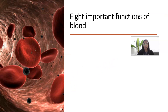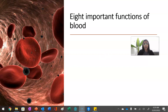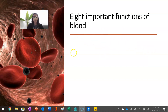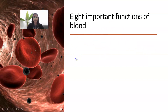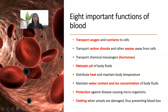We're going to start by looking at the eight important functions of blood. Blood is more than just red blood cells — it is a liquid composed of many different constituents. First, it transports oxygen and nutrients to cells. It also removes carbon dioxide and other waste from those cells.